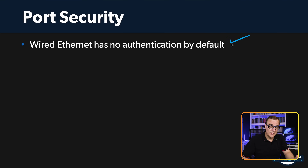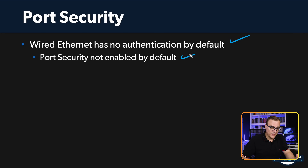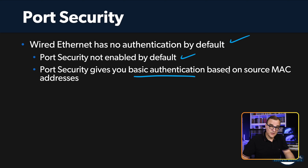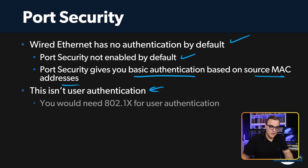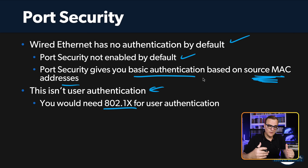Ethernet does not have any security by default. Port security is not enabled by default — you have to configure it. This gives you basic authentication based on source MAC addresses. The switch looks at frames received, examines the source MAC address, and determines if the device is allowed. This is not user authentication — you need 802.1x for user authentication. Port security gives very basic security based on MAC addresses, and the idea is that you use multiple mechanisms to improve overall network security.